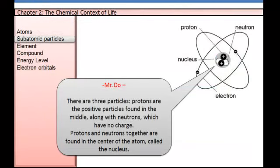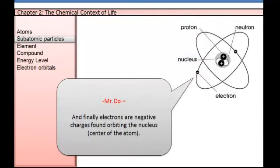There are three particles. Protons are the positive particles found in the middle, along with neutrons which have no charge. Protons and neutrons together are found in the center of the atom, called the nucleus. And finally, electrons are negative charges found orbiting the nucleus.